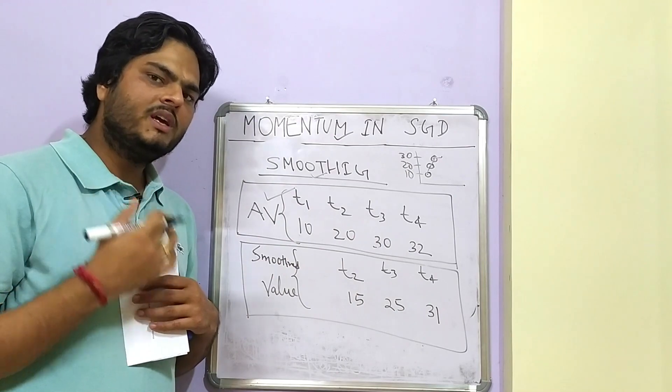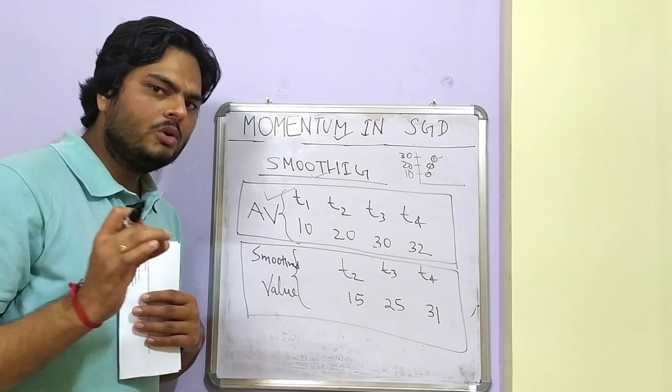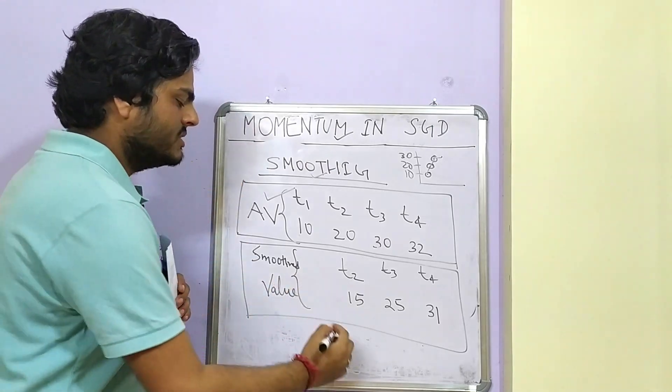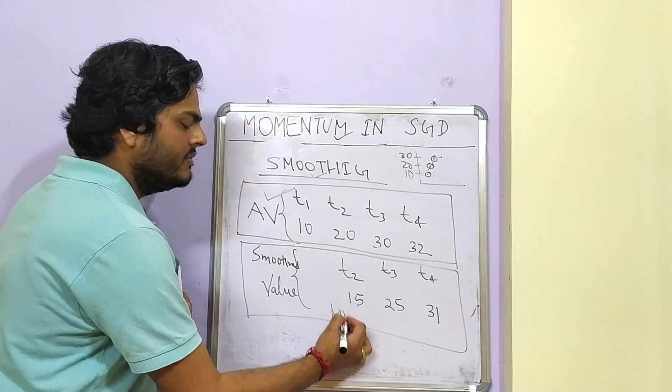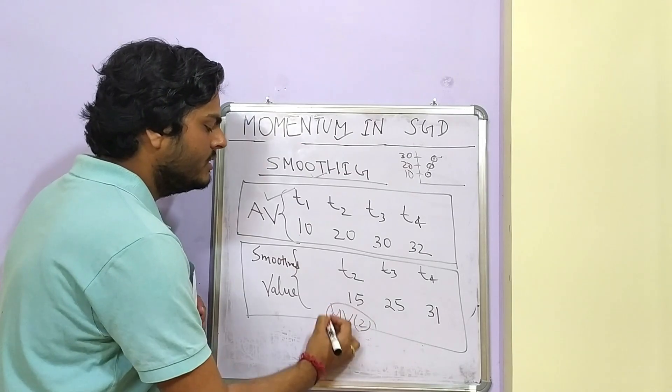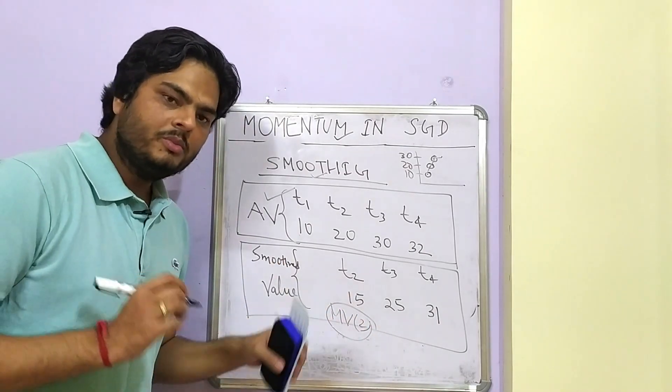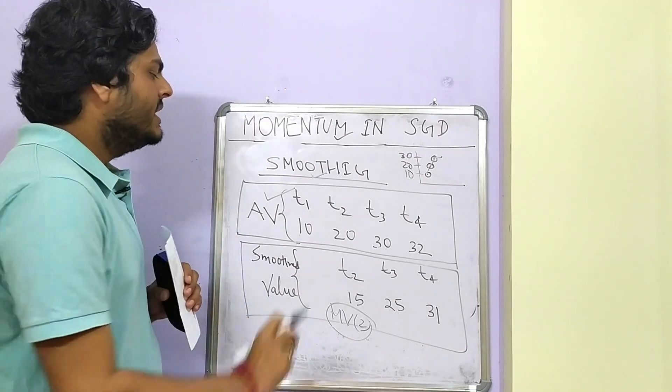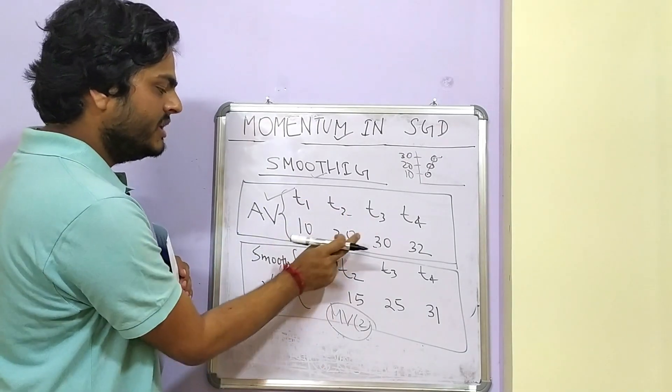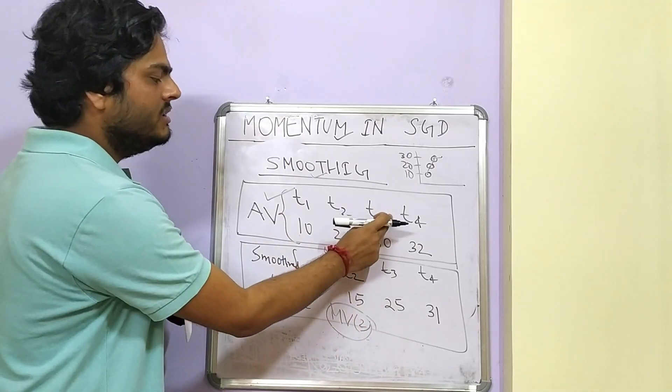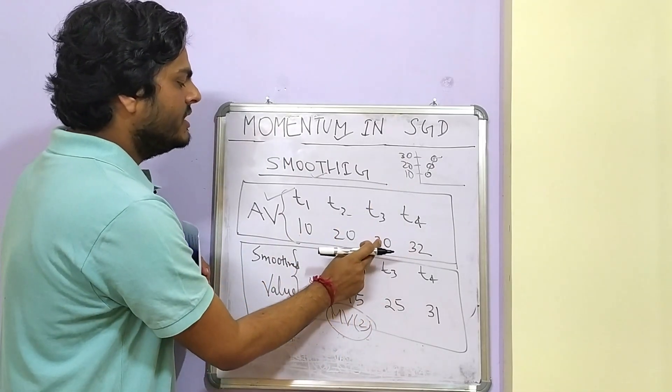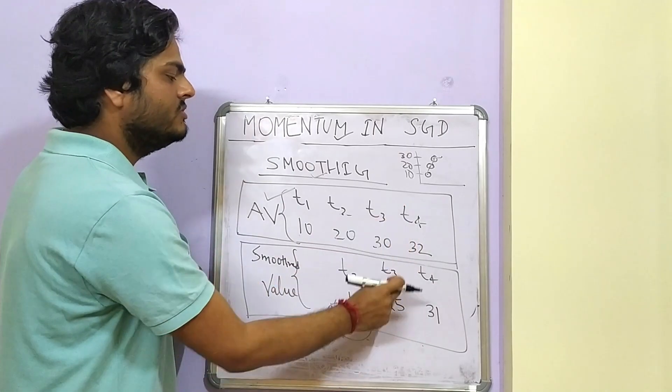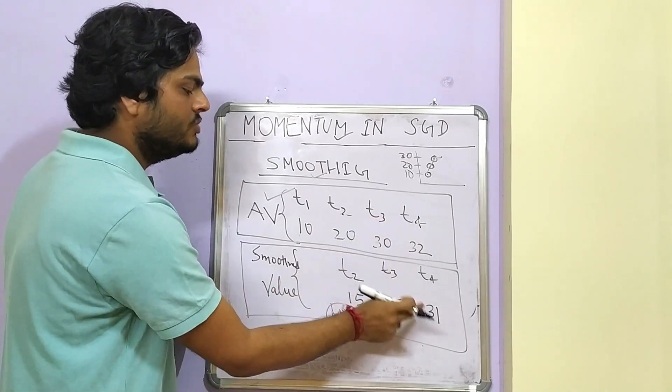One simple way to do that is we just take the moving average. If you don't know, the moving average is nothing but an average of previous two numbers. So if I say moving average of window 2, at T2 the moving average will be average of T1 plus T2, 20 plus 10 by 2, 15. At T3, moving average will be 30 plus 20 by 2 that is 25. At T4, moving average will be 32 plus 30 by 2 that is 31.